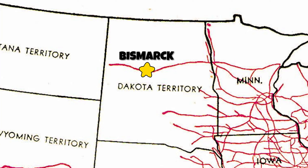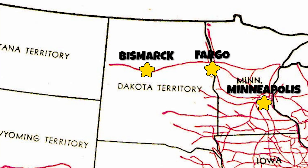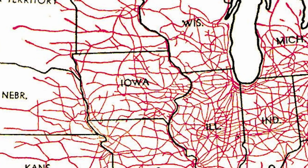For how unpopulated the Dakotas are, it seems weird why they are divided. So why are there two Dakotas?